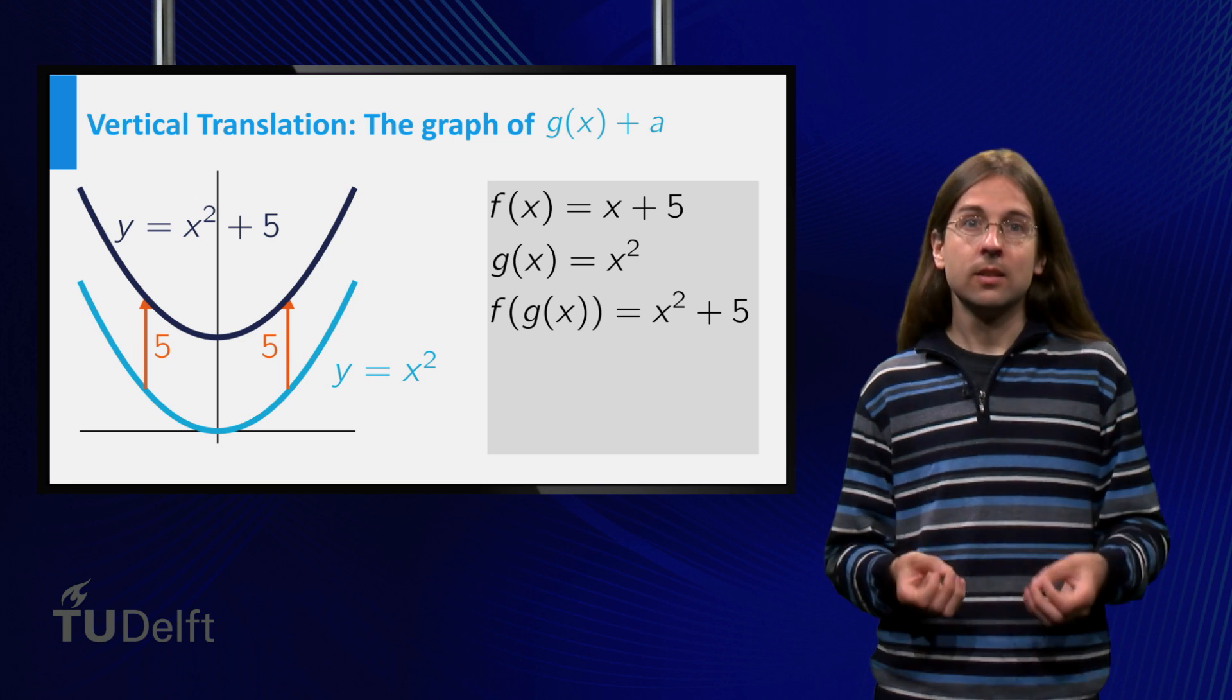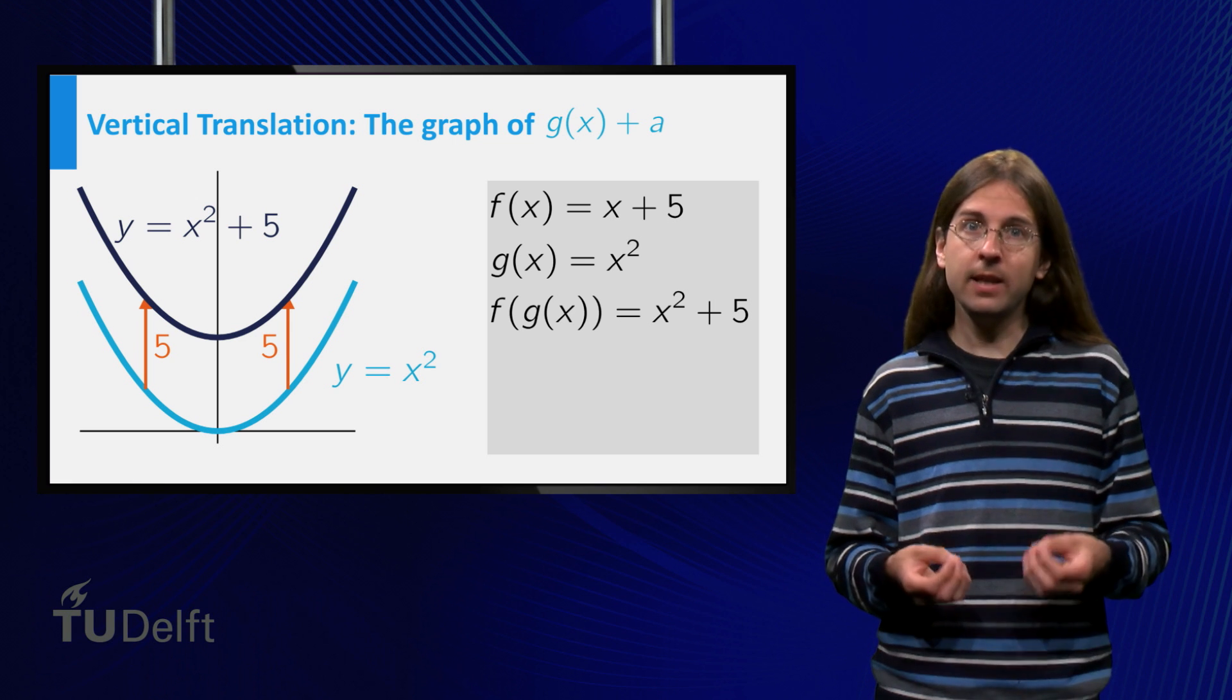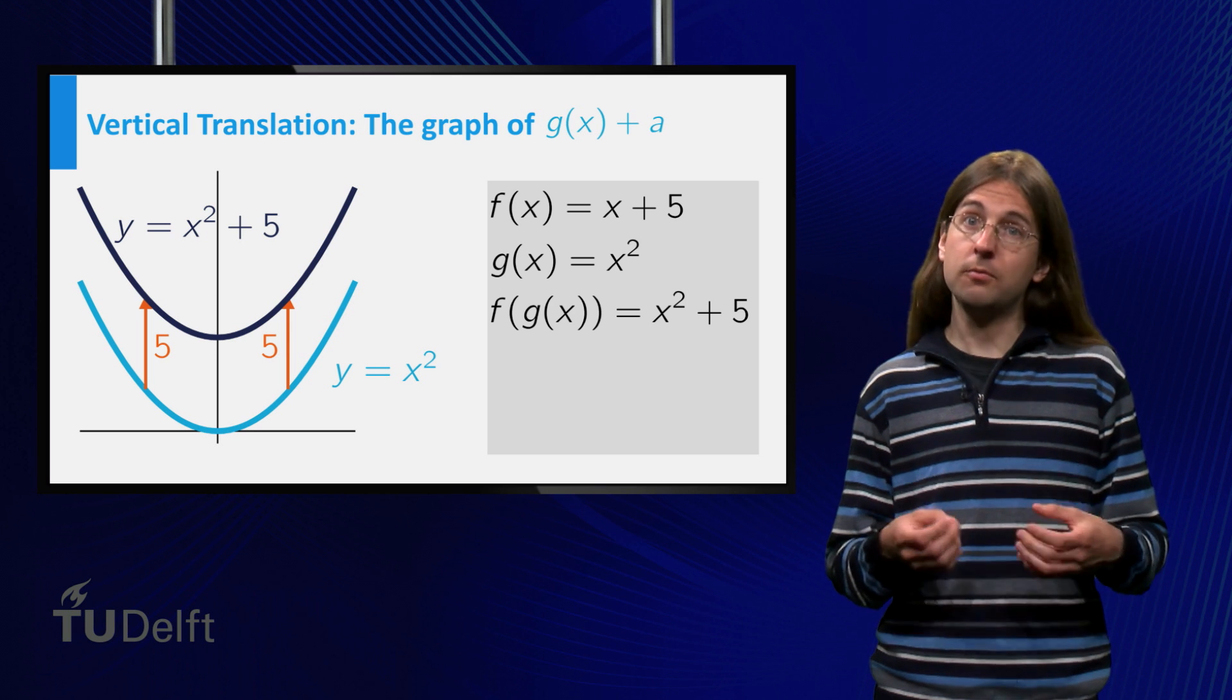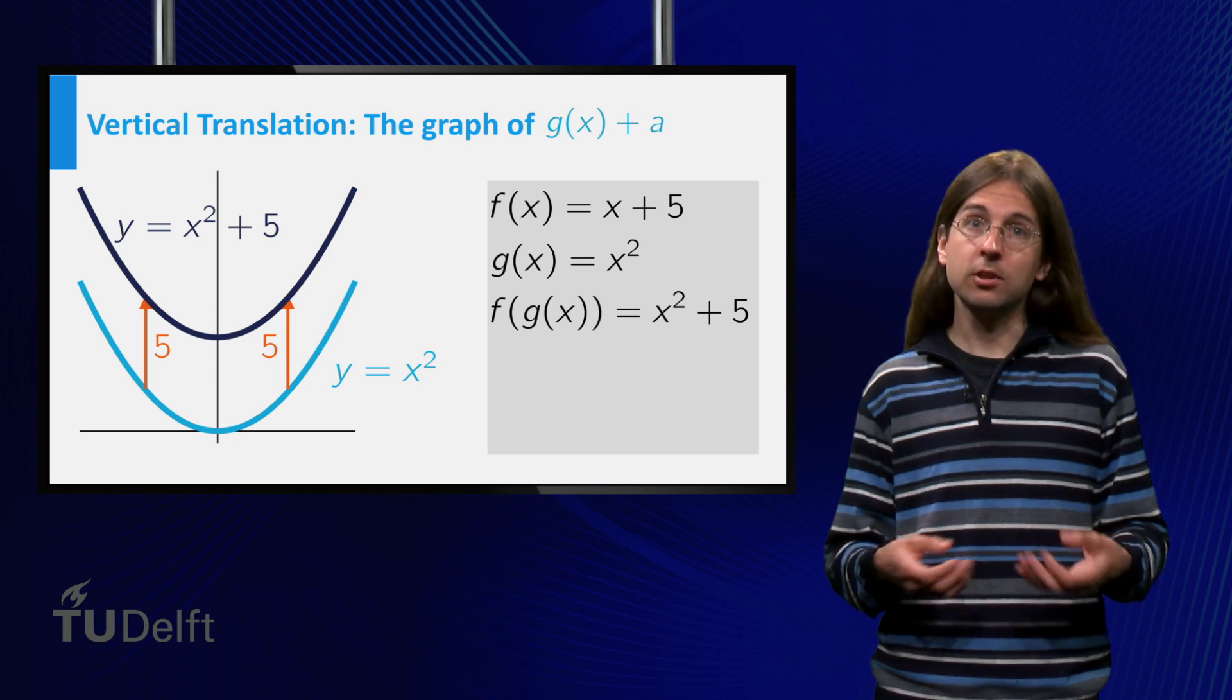And indeed, if we look at x squared plus 5 for arbitrary x, the result is always 5 higher than the value of x squared, so the graph is shifted upwards.